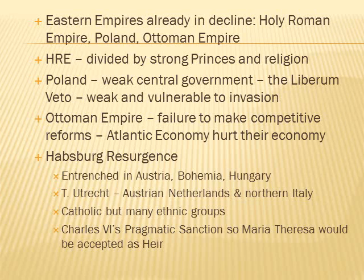There was a Habsburg resurgence. The Habsburgs are entrenched in Austria, Bohemia, and Hungary. With the Treaty of Utrecht they gained the Austrian Netherlands and large portions of northern Italy. The Habsburg Empire is essentially Catholic but contains many ethnic groups, and later when nationalism emerges that will be a problem. Charles VI's Pragmatic Sanction was designed to get other rulers and leaders within the Habsburg Empire to agree that Maria Theresa would be accepted as his heir even though she was a woman — something rather unheard of in Central Europe at the time.